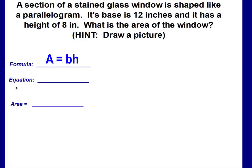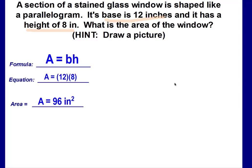Area equals base times height — always write this first. Then substitute: the base is 12 inches, so substitute 12 for b. The height is 8 inches, so substitute 8 for h. Then do the math: 12 times 8 is 96. The area of the stained glass window is 96 inches squared.